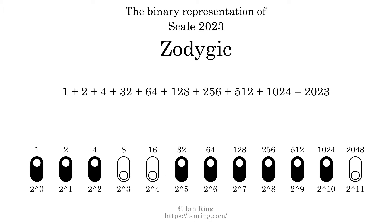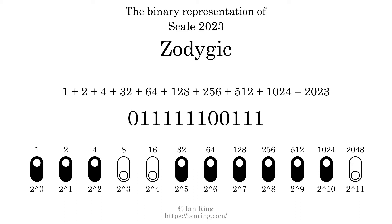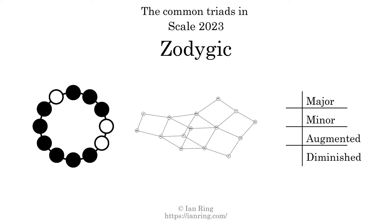The scale number not only enumerates the scale with a unique index, but it also literally describes the tonal content of the scale. Represented as a binary number in base 2, the scale number is 0, 1, 1, 1, 1, 1, 1, 1, 0, 0, 1, 1, 1. Here are the common triads present in this scale.